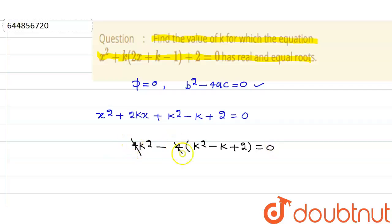The 4s cancel out, so we have k² - (k² - k + 2) = 0. That becomes k² - k² + k - 2 = 0.